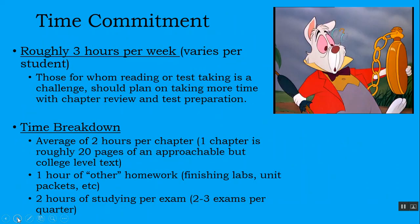The time commitment for Environmental Science is roughly three hours per week outside of class; however, this varies greatly depending on the student. For those for whom reading or test-taking is a challenge, plan on more than three hours per week. On average, two hours a week is spent reading and outlining or completing a study guide for each chapter of the textbook — roughly 20 pages of an approachable but college-level textbook. There's usually about an hour of other homework each week finishing labs or completing unit packets. On weeks where we have an exam, you might expect to spend two or so additional hours studying.